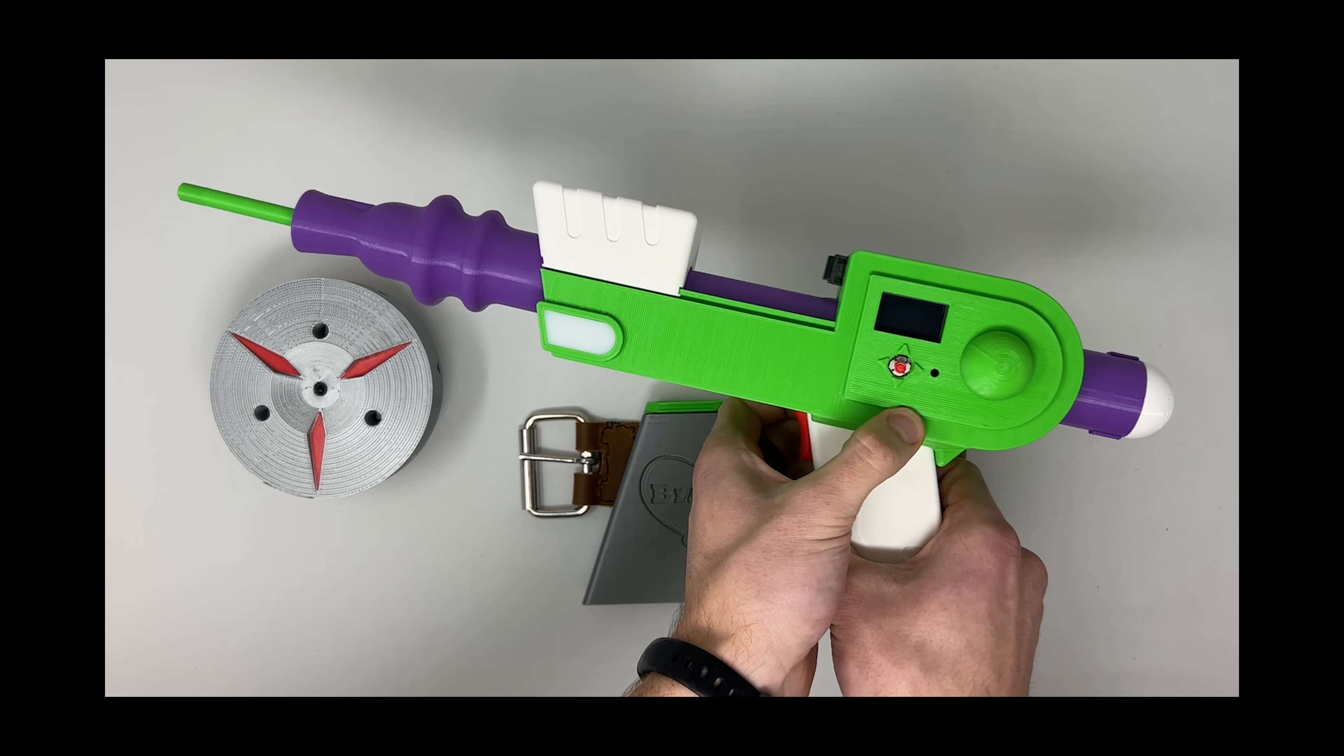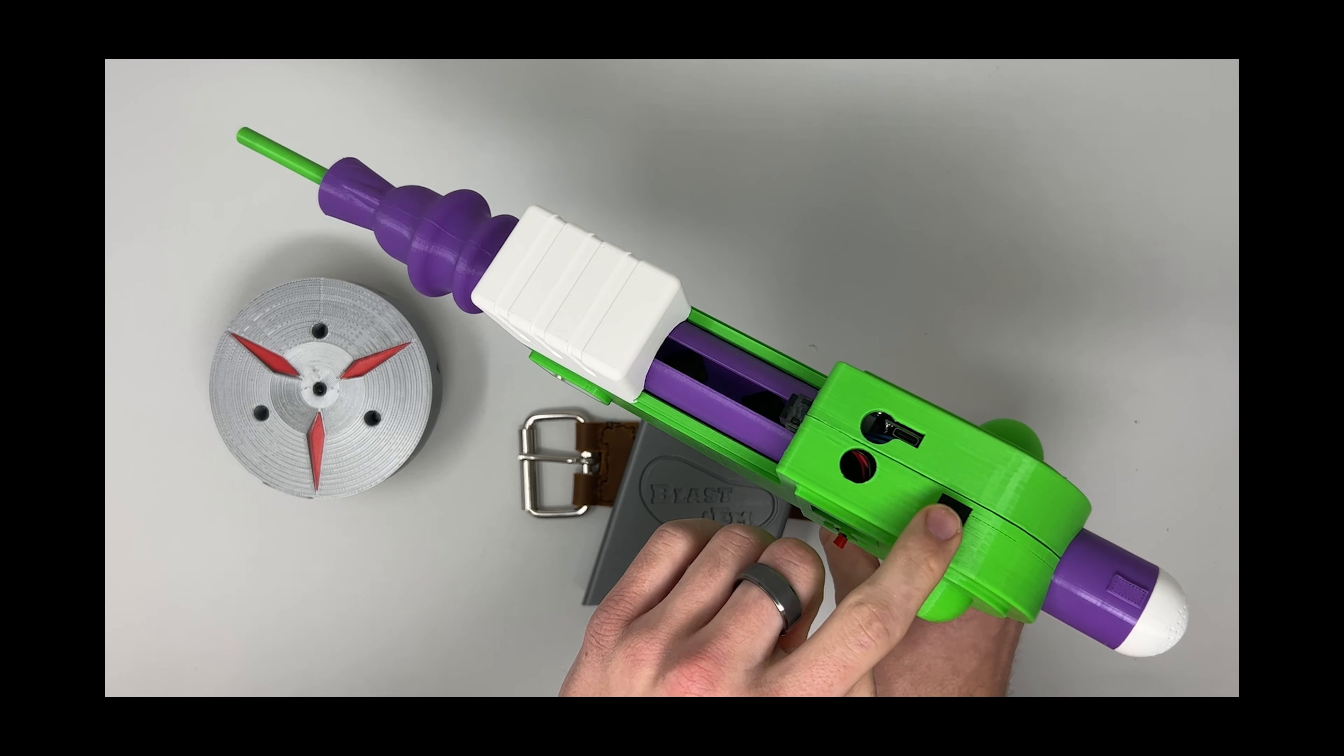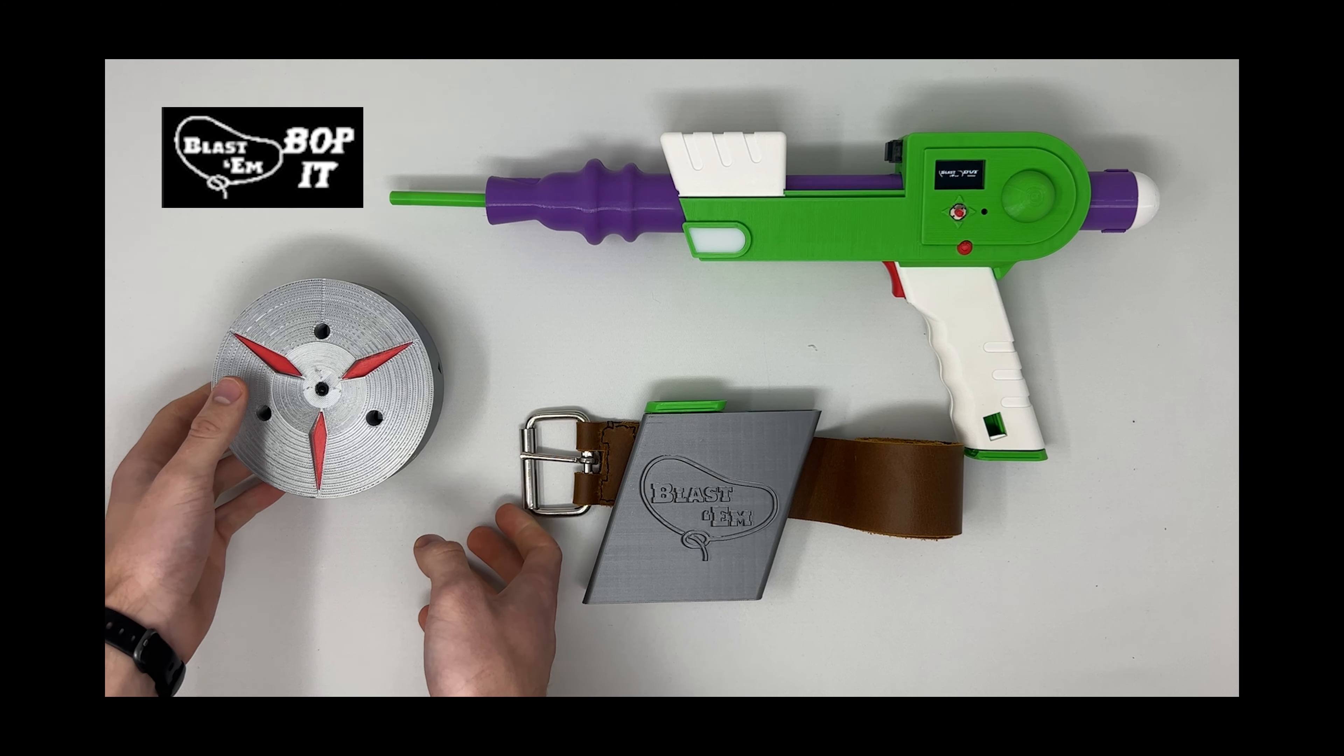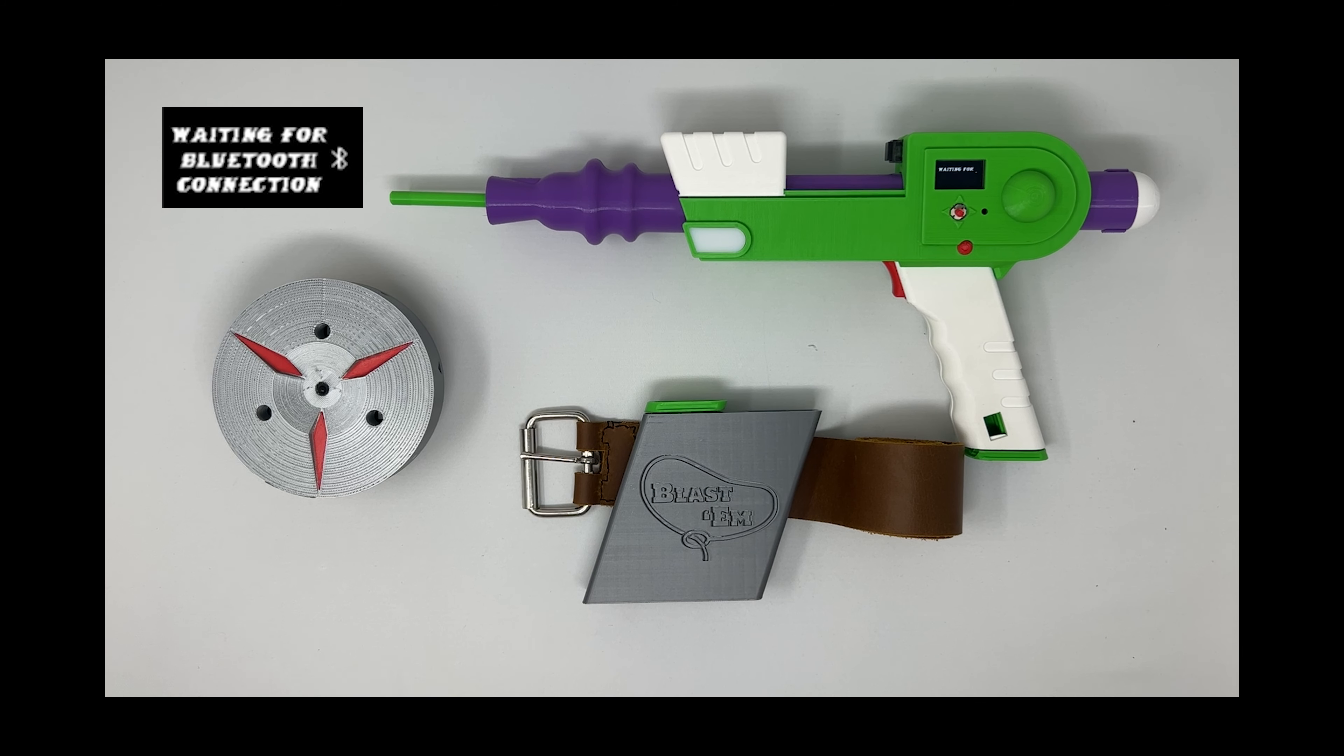Here's how you play the game. First, power on the blaster using the safety switch, then press the reset button to get started. The OLED screen will show the startup graphic, then indicate that it's waiting for a Bluetooth connection to the target.